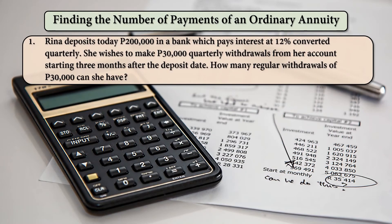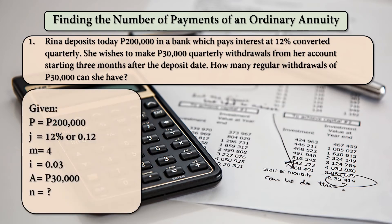First example: Rina deposits today 200,000 pesos in a bank which pays interest at 12% converted quarterly. She wishes to make 30,000 pesos quarterly withdrawals from her account starting 3 months after the deposit date. How many regular withdrawals of 30,000 pesos can she have? Given: P is equal to 200,000 pesos because it is deposited today, J is 0.12, M is 4, so I is equal to 0.03, and A is 30,000.